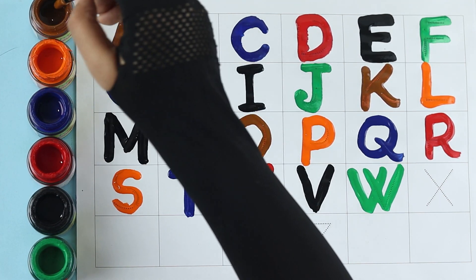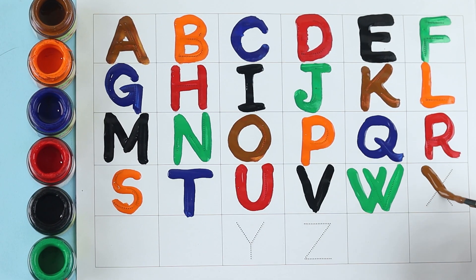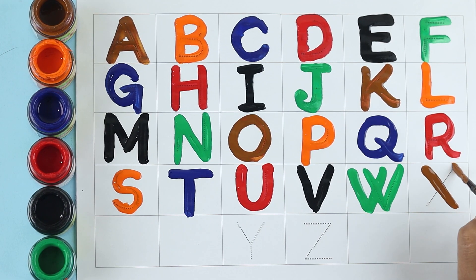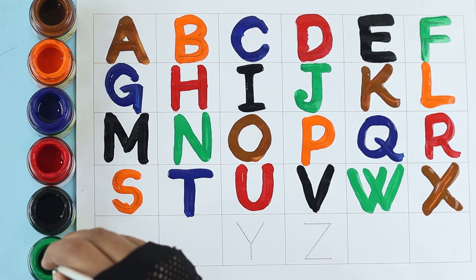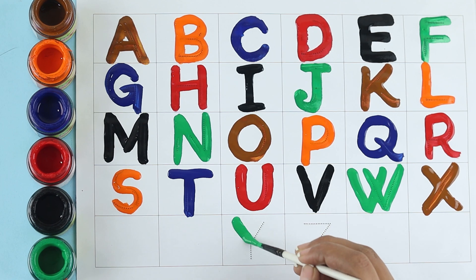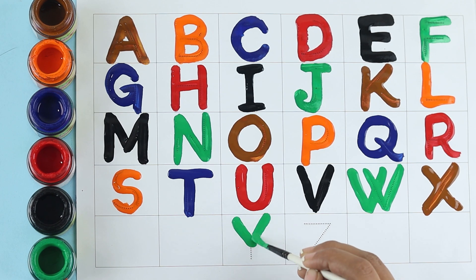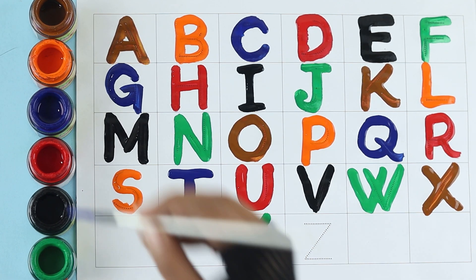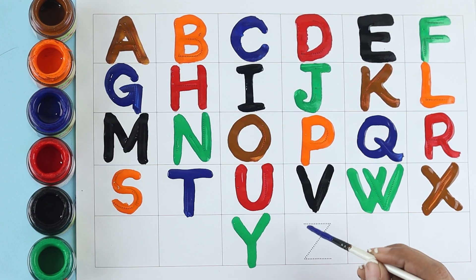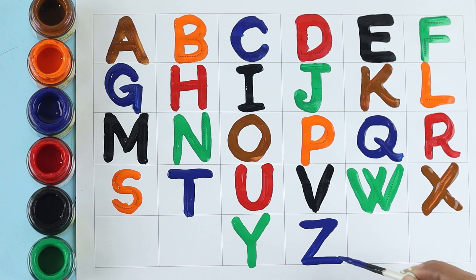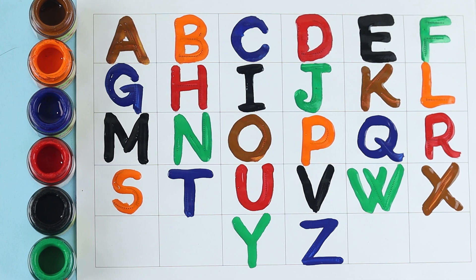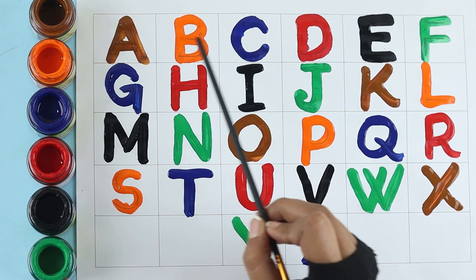Brown color, X for x-ray. Green color, Y for young. Blue color, Z for zebra.